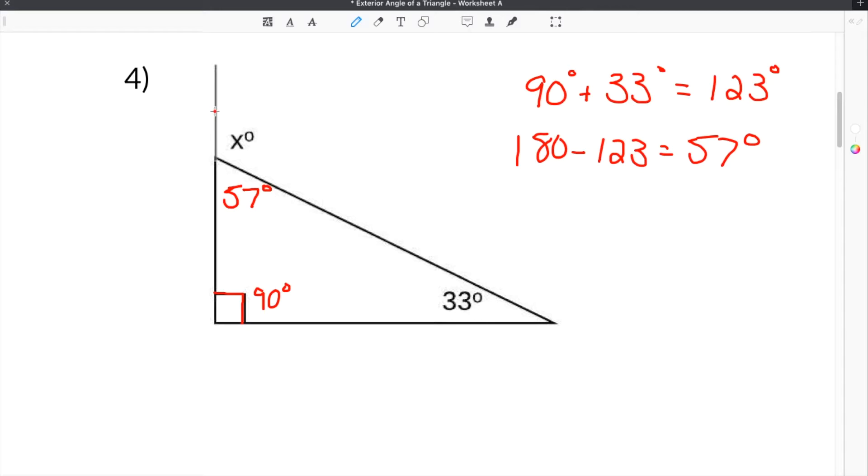So if you remember back to the original problem, this entire thing is a straight line. So it all has to add up to 180 degrees. So if this amount is 57, you can do 180 minus 57 to get the remaining amount. And in this case, 180 minus 57 is 123 degrees. So we know that x is 123 degrees.